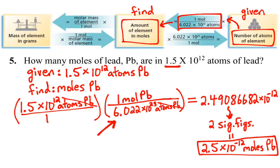So 1.5 times 10 to the 12 atoms of lead equals 2.5 times 10 to the negative 12 moles of lead. Our answer is logical because 10 to the 12th is significantly smaller than 10 to the 23rd — the number of atoms in one mole — so we must have a much smaller amount than one mole of lead, since we have far fewer atoms than you would expect in one mole. Our answer is logical in that sense.